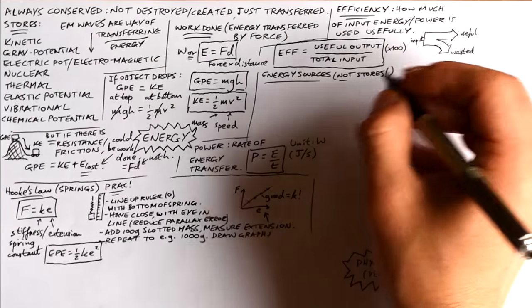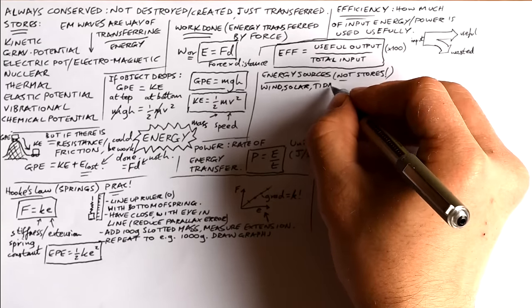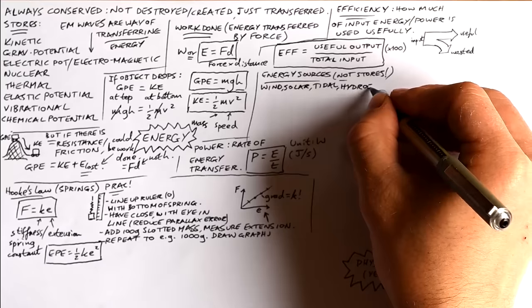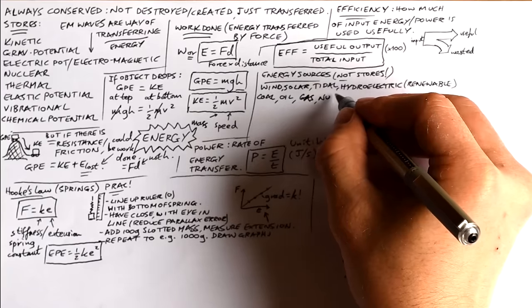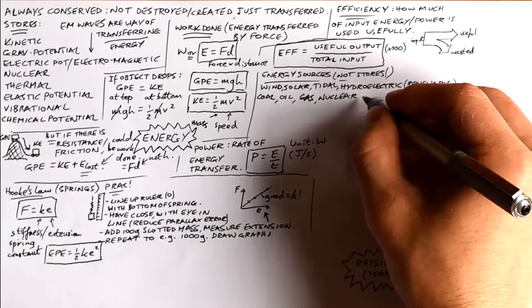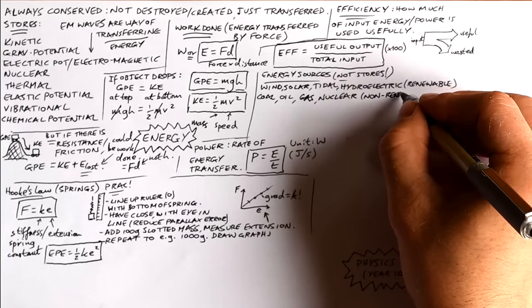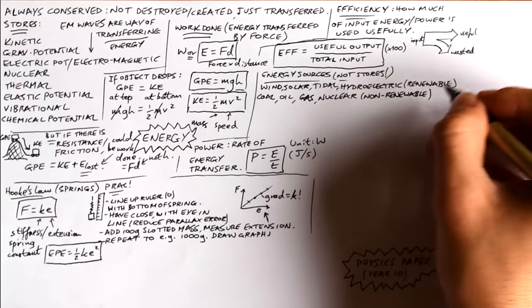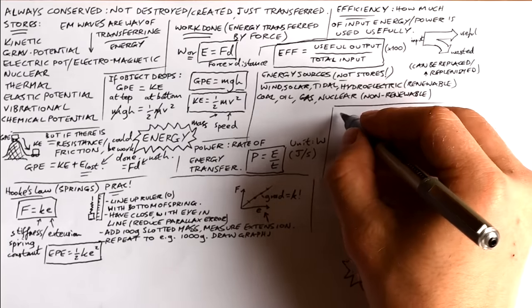Energy sources, they're not the same thing as stores or types of energy. Of course we have wind, that uses kinetic energy. Solar, that captures EM waves. Tidal, again kinetic energy. Hydroelectric, same. All of these are renewable. In other words they can be replaced or replenished once they are used. On the other hand we have some non-renewable sources. Coal, oil, gas. They all use chemical potential energy to make heat. And we have nuclear which of course uses nuclear energy to make heat. And then we make steam from water with heat which turns a turbine.